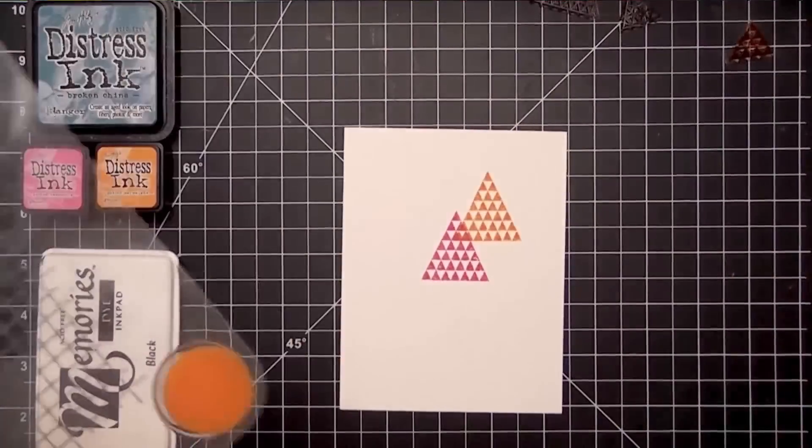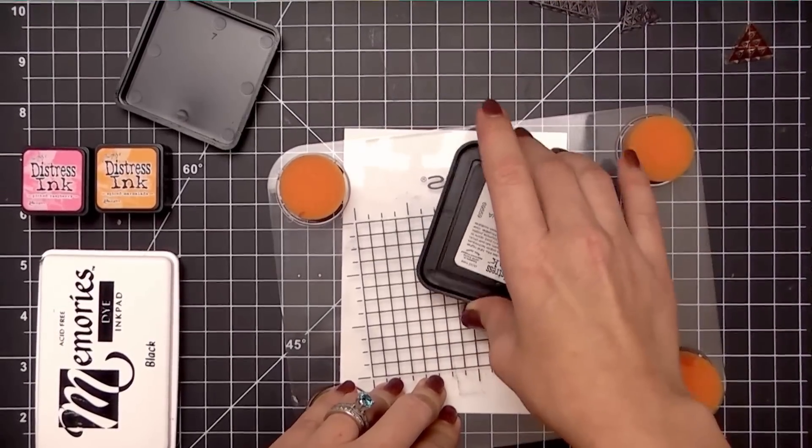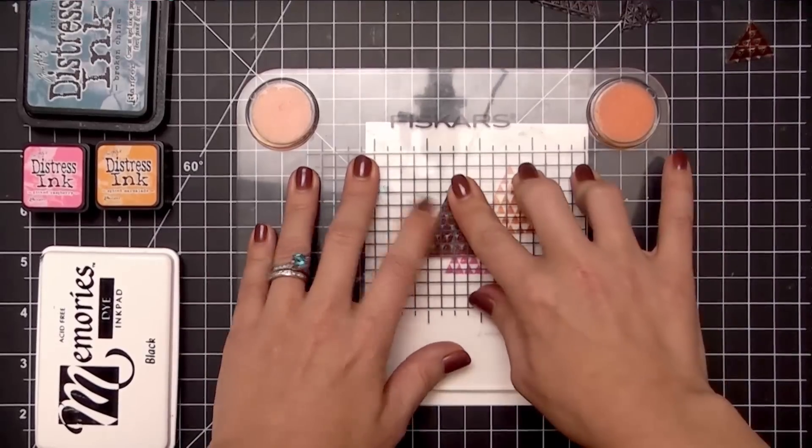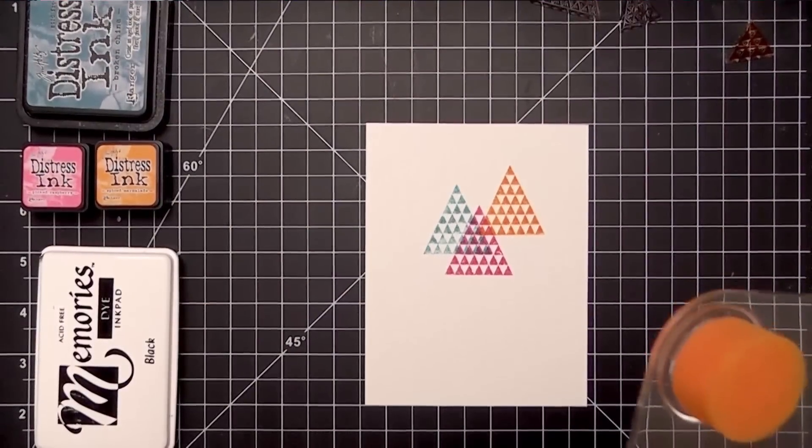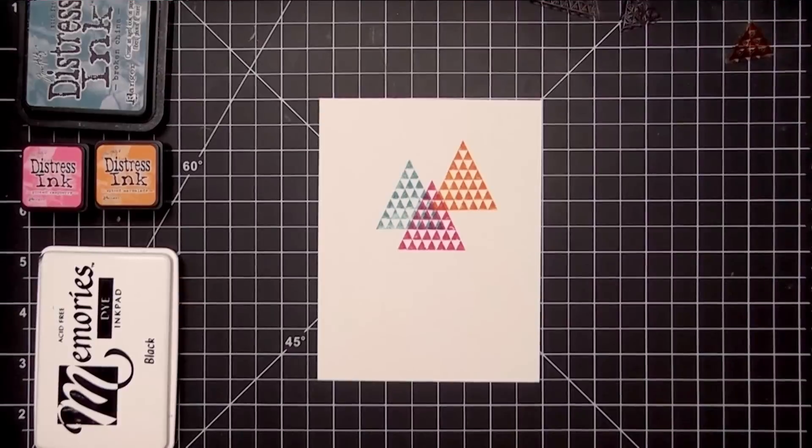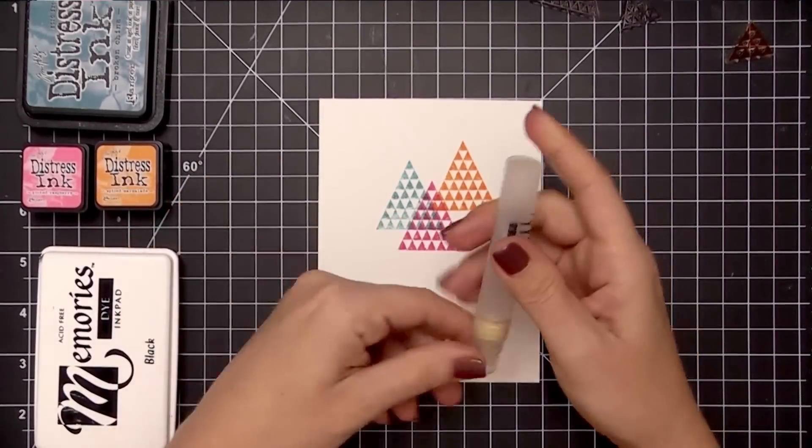You'll notice that I'm using the stamp press to do this because I am trying to line these up exactly over each other. But don't fear because when we spray these, it's going to cause those colors to spread out and bleed and you'll never know that they weren't exactly lined up.